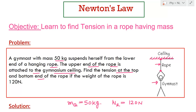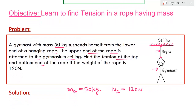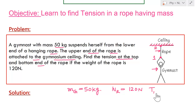The target variables are: tension at the top and bottom end of the rope. Let us call the bottom of the rope point 1 and the top of the rope point 2. So we have to find tension T1 at point 1 and tension T2 at point 2.